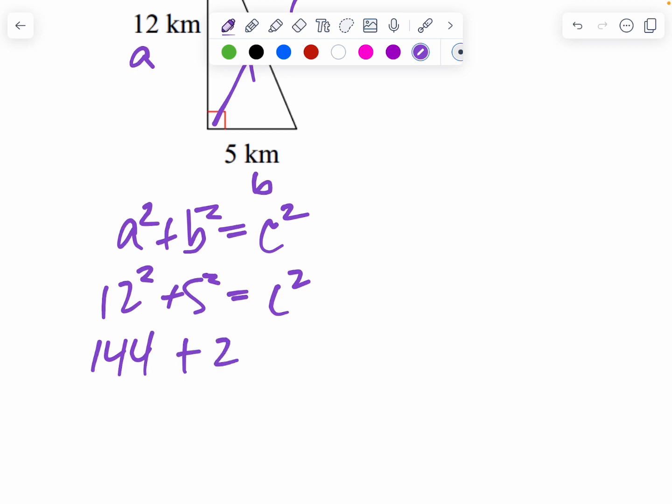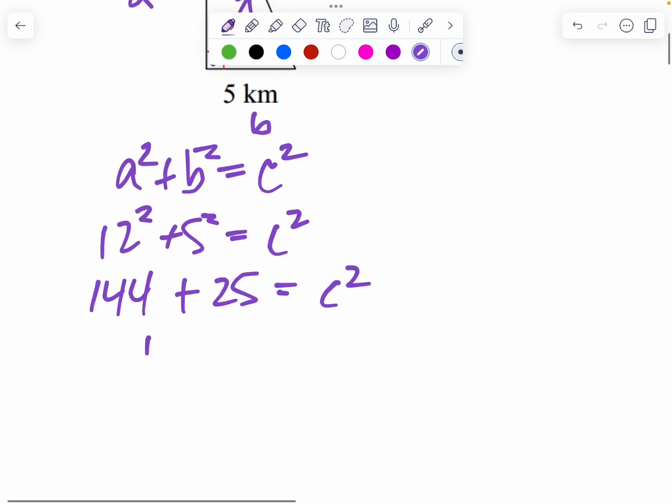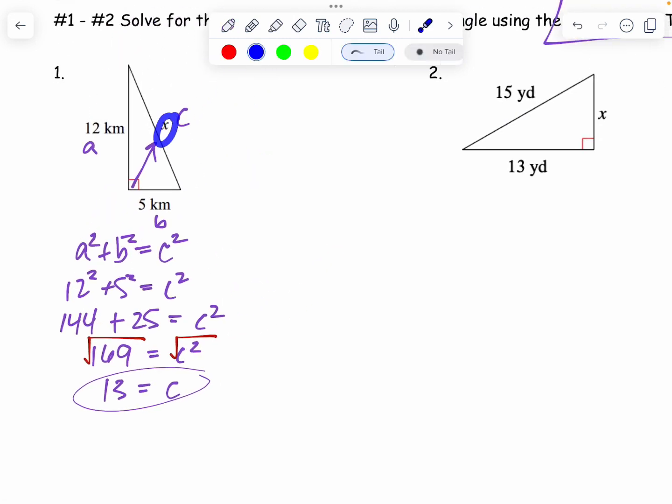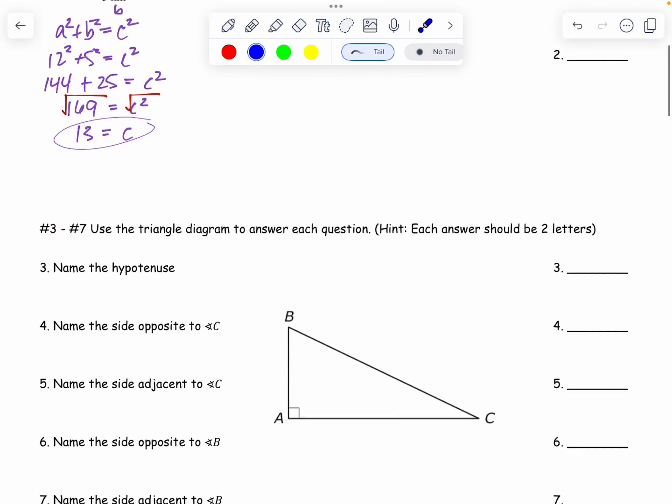5 squared is 25. And I'm going to add those together and I get 169. And in order to get the C by itself, don't forget to square root both sides and we get 13 equals C. I could have also put X there, I guess. Usually I use the letter. These are all X's. The missing side is 13.